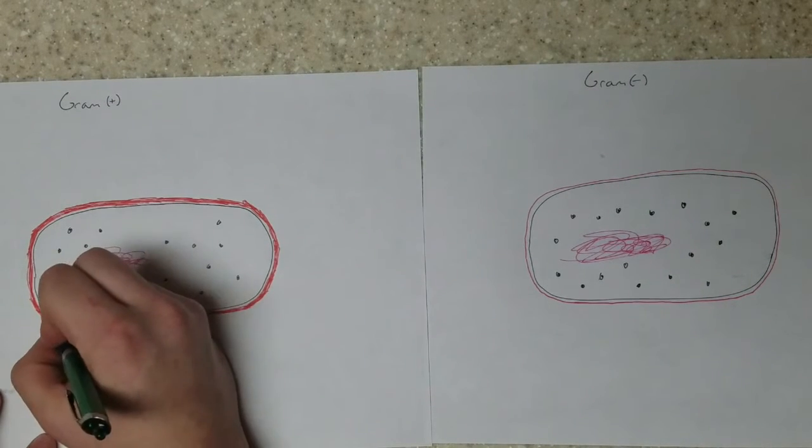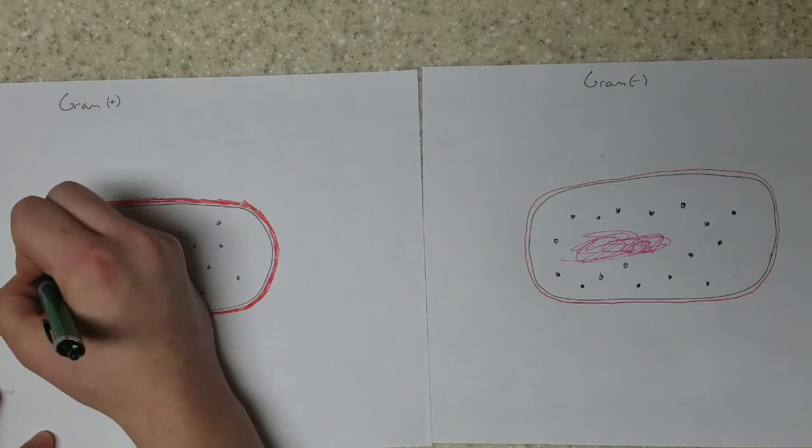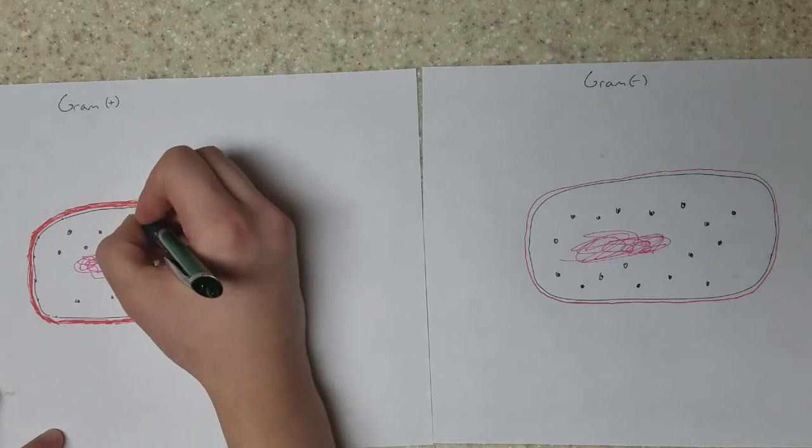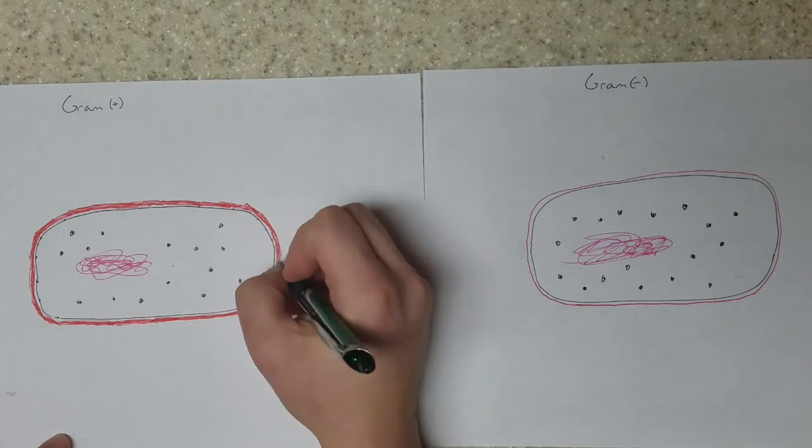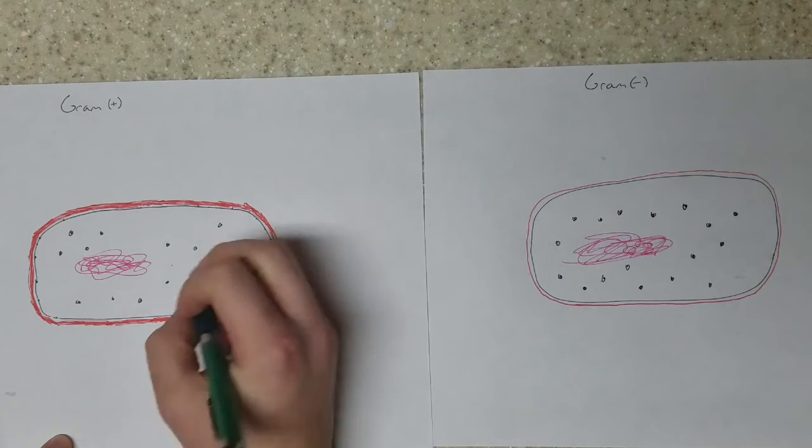Up next, I'm drawing membrane proteins, also found on the plasma membrane of both gram-positive and negative cells. So I draw them around on both cells.